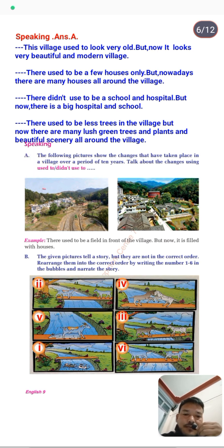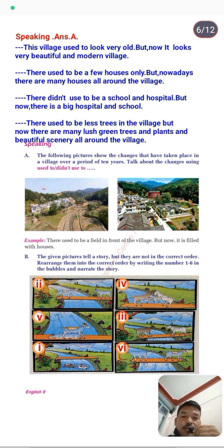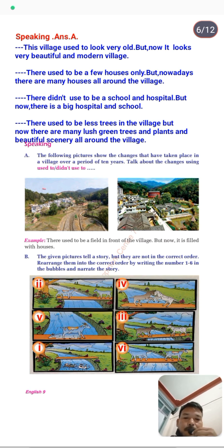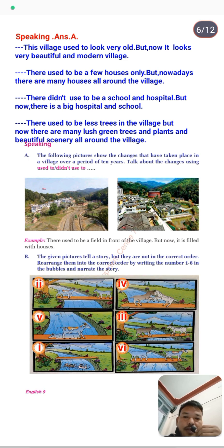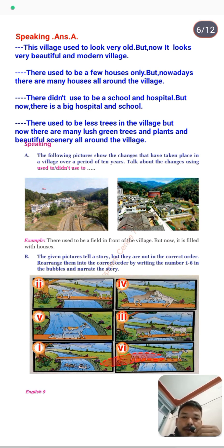Now Speaking Part B: the given pictures tell a story but they are not in the correct order. You have to rearrange them into the correct order by writing numbers one to six in the bubbles, and then narrate the story. Here are the pictures rearranged in correct order: one, two, three, four, five, and the final picture. Now here is the story narrated based on these pictures.